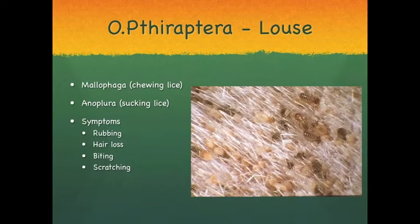The first order we will be discussing is order Phthiraptera, which are the louse. There are two types of louse: chewing and sucking. Chewing lice have larger, rounder heads. They feed on skin debris, blood, and scabs. Chewing lice cause the most irritation to the cattle.